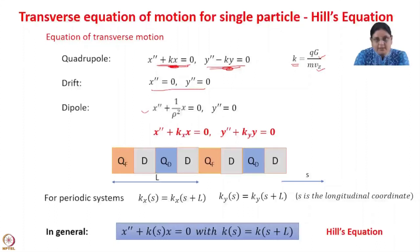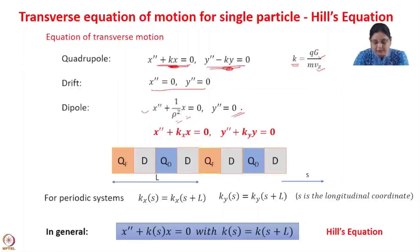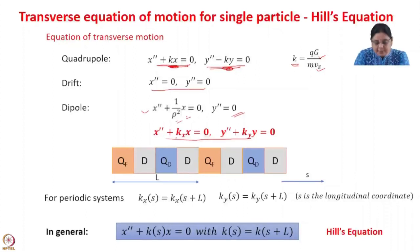Similarly, for a dipole magnet, we can write the equation of motion. A dipole magnet is a magnet with two poles that bends the beam in one direction, where ρ is the radius of curvature of the bend. In the x direction we write x'' + (1/ρ²)x = 0, and in the y direction there is no force so y'' = 0. In general, we can write the equation of motion of the particles inside any system as x'' + k_x·x = 0 and y'' + k_y·y = 0 in the x and y directions.